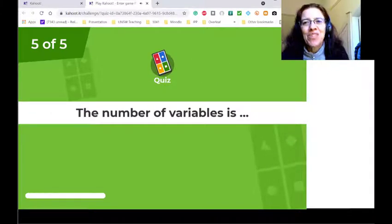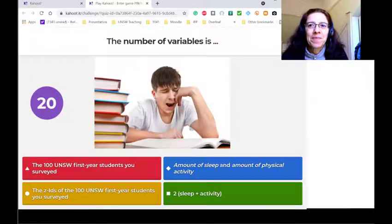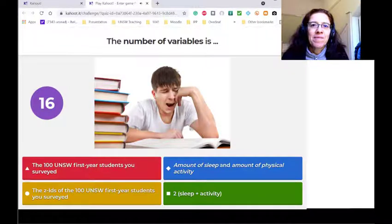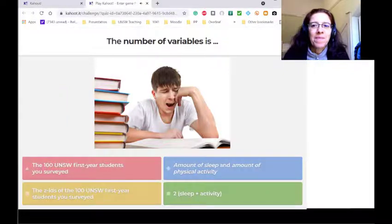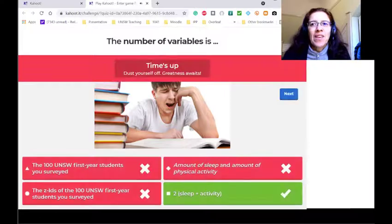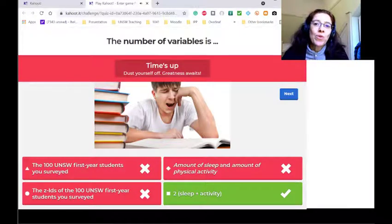Not doing very well. Last question, the number of variables. Please write it down. It's better to write and get it wrong than to do nothing. So the number of variables was two because you're looking at amount of sleep and amount of physical activity, and that is two. So hopefully this Kahoot has helped you nail down those definitions.